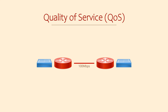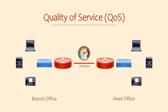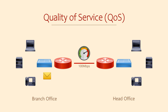Here we have a main office and a branch office. Between them is a 100MB WAN link, which is reaching capacity. This link carries all types of traffic, including web browsing and phone calls. When the link is over capacity, some traffic will drop. There's no way around that — that's a limit to how much data this link can carry.